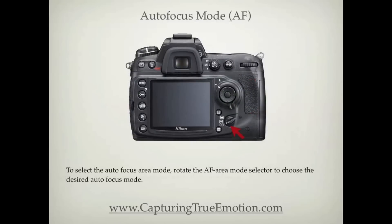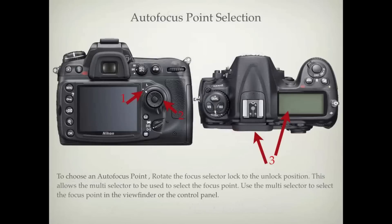To select autofocus area mode, rotate the AF mode selector to choose the desired focus mode. To choose an autofocus point, rotate the focus selector lock to the unlocked position. This allows the multi-selector to be used to select the focus point. Use the multi-selector to select the focus point in the viewfinder or the control panel.